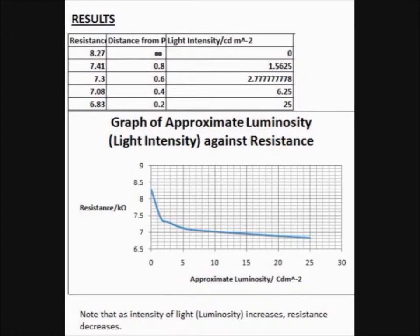Light intensity or luminosity can then be roughly calculated as 1 over the square of the distance and a graph of resistance against light intensity hitting the semiconductor can then be plotted.